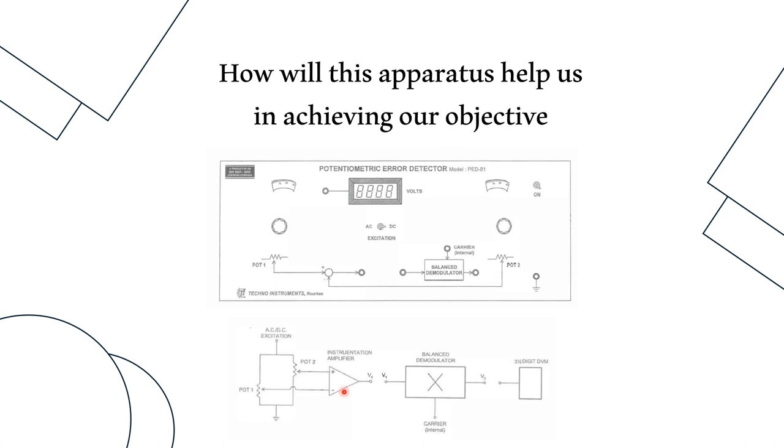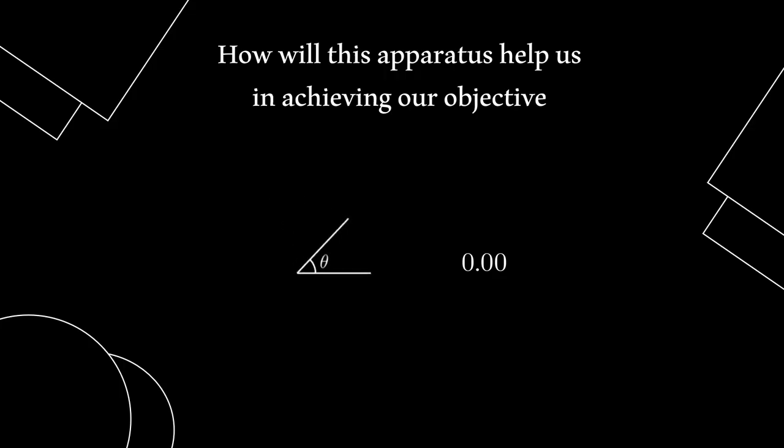In case of AC mode, we pass this output E to the CRO to get the waveform as well as the demodulator so that we can have a stable value on the display. Working with this apparatus is simple. We need to change the relative angle between the two potentiometers which gives us different readings on the display.